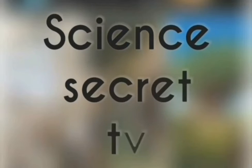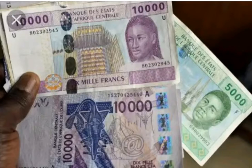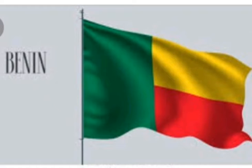Number 1, Benin Republic. Benin Republic is one of the West Africa countries that gained independence on August 1, 1960. Their capital territory is Porto-Novo. This is the Benin Republic map. The name of their president is Patrice Talon. This is the picture of their currency and flag. But the seat of government is in Cotonou.